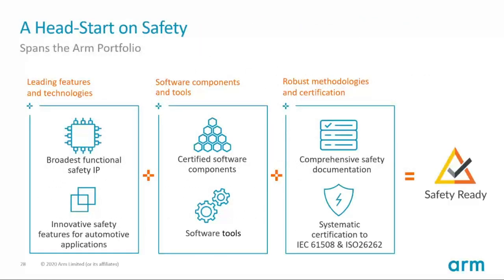One of the big challenges is the final safety certification. We are investing today to help solve these challenges. The Safety Ready program spans all the ARM technologies that are needed for safety solutions. We are doing more of the work around functional safety upfront to simplify the overall certification process for our partners and customers — from silicon to module to end user application. We are delivering a broad range of safety certifiable IP, the right set of certified software components and software tools like our software test libraries, compilers, and certified RTOS. Our robust methodologies and certification include comprehensive safety documentation, and we work with third-party certification authorities to pre-certify our products for relevant safety standards.